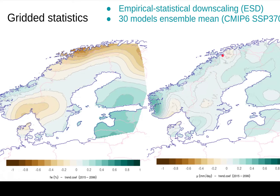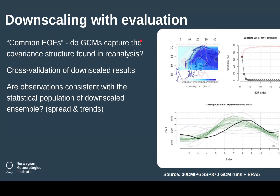To evaluate these results, we also need to check whether the global climate models do a good job reproducing the predictors used in these models. For this, we use common EOFs to see if the global climate models capture the covariance structure found in the reanalysis. This example shows the spatial pattern of the covariance matrix based on a joint dataset of the mean annual cycle of all CMIP6 models and ERA5. The leading component explains 68%, indicating a fairly close similarity. The time index of the leading mode shows the black curve for ERA5 and the green ones for CMIP6, with one outlier in a different color.